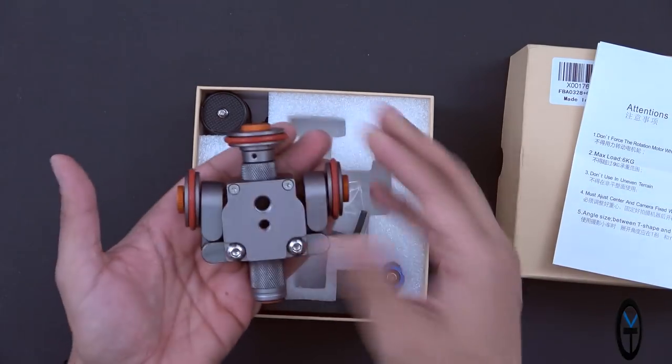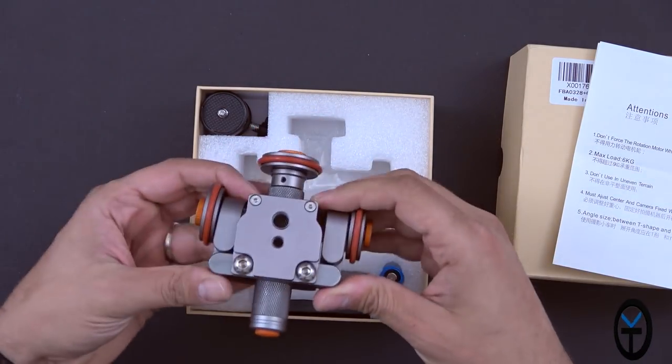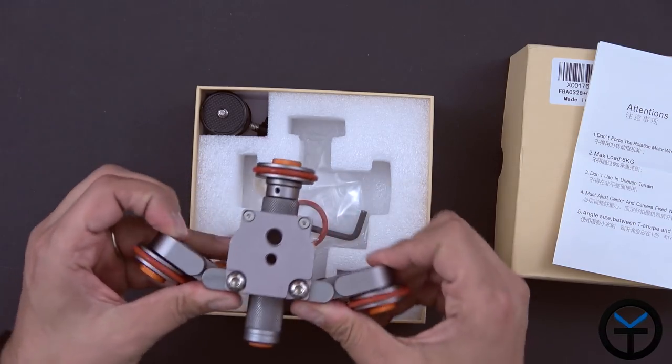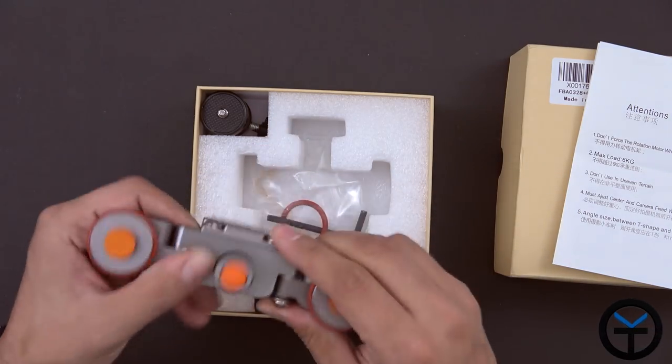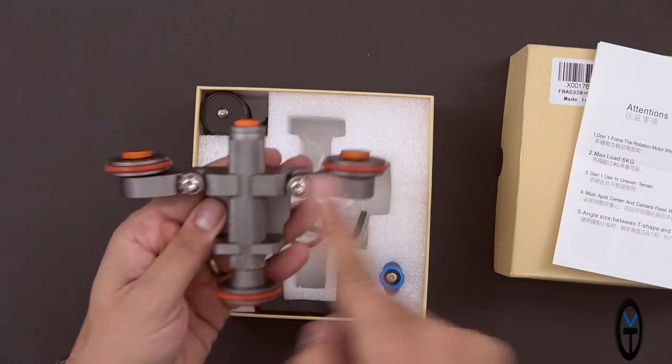Here is the actual motorized slider. They call it a slider. I call it, you know, obviously this is motorized. Let's go ahead and fix it here. You'll see there's the two main wheels. These are non-motorized and this is where the motorized wheel is.